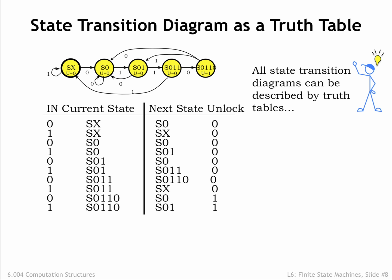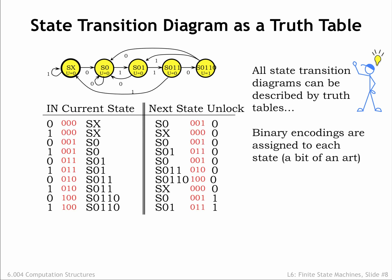All the information in a state transition diagram can be represented in tabular form as a truth table. The rows of the truth table list all the possible combinations of current state and inputs. The output columns of the truth table tell us the next state and output value associated with each row. If we substitute binary values for the symbolic state names, we end up with a truth table just like the ones we saw in chapter 4. If we have k states in our state transition diagram, we'll need log base 2 of k state bits, rounded up to the nearest integer since we don't have fractional bits. In our example, we have a 5-state FSM, so we'll need 3 state bits.